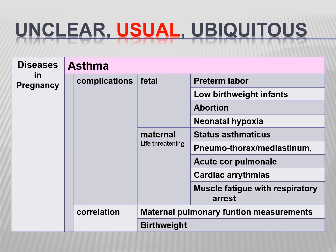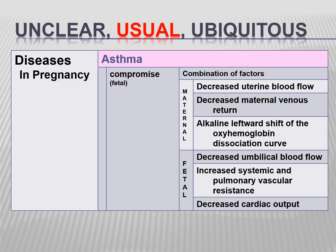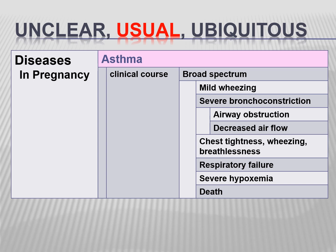Maternal pulmonary function tests must be checked. Maternal effects include decreased uterine blood flow and decreased maternal venous return, causing an alkaline leftward shift of the oxyhemoglobin dissociation curve. Fetal effects include decreased umbilical blood flow, increased systemic and pulmonary vascular resistance, and decreased cardiac output. The critical course involves wheezing, bronchoconstriction, chest tightness, eventually respiratory failure, severe hypoxemia, and death if not controlled.